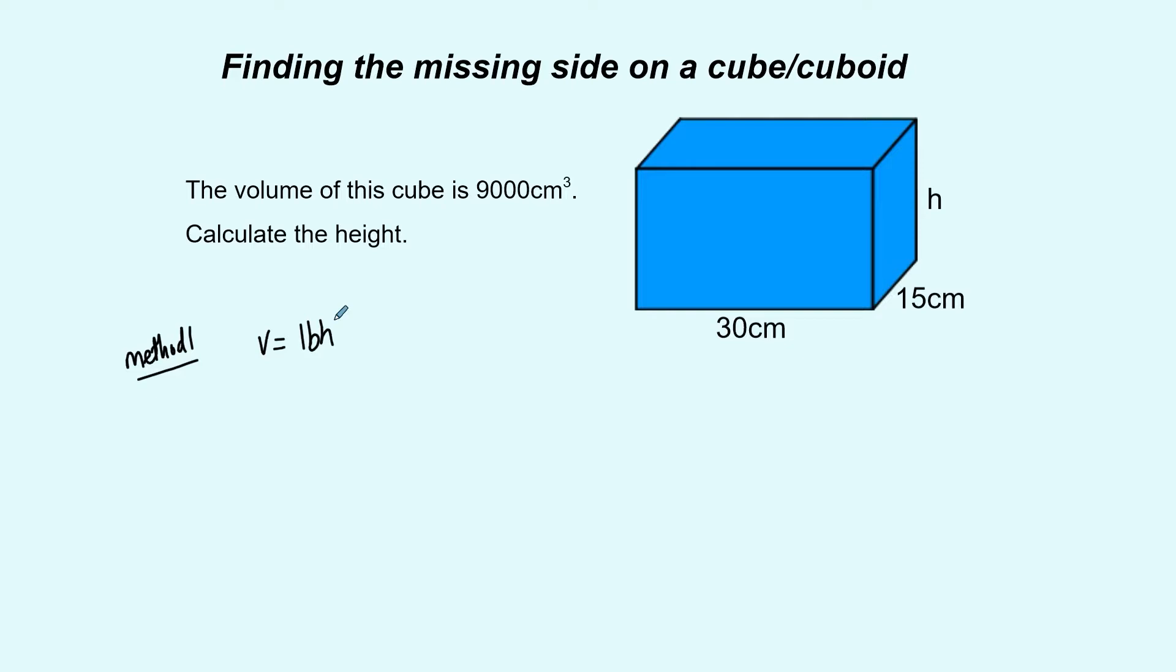Now we know the volume of the shape here is 9000 cubic centimeters. What we're going to do at this stage is the same as we would normally do. We put in all the numbers that we have from the diagram and the information. The thing that's different is we know the volume is 9000 so on this left hand side we have V is 9000 so we replace the V with 9000 and we get 9000 equals the length which is 30 times the breadth which is 15 times the h for height.